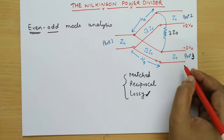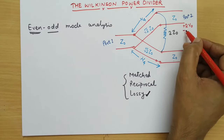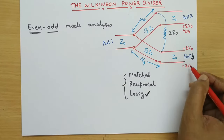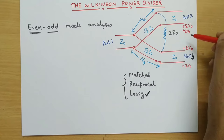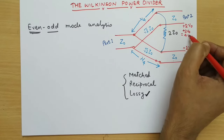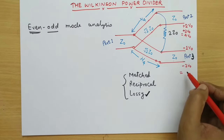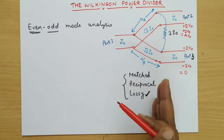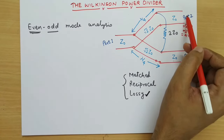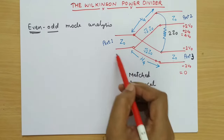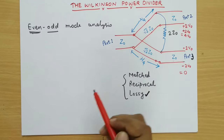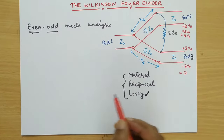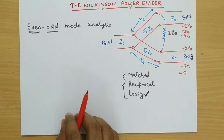For odd mode, we give plus 2V0 at port 2 and minus 2V0 at port 3. The overall voltage at port 2 becomes 4V0 and at port 3 becomes 0. That means when we superimpose both modes together, we are exciting only one port and seeing how the other ports' voltages change. The same thing can be repeated for port 3 and we can calculate the S-parameters this way.